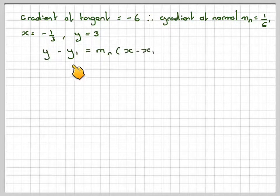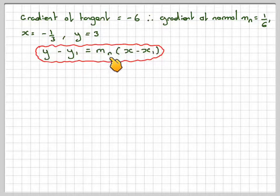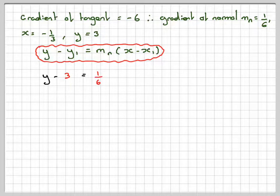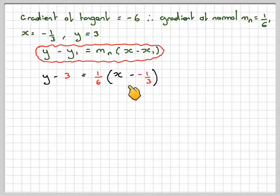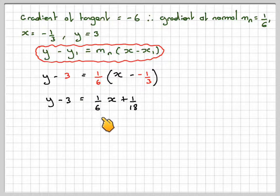So using y minus y1 equals m times x minus x1, and m we're going to call the gradient of the normal. We get y minus 3 equals 1 sixth of x minus minus 1 third. So it gives me y minus 3 is 1 sixth of x, and then that's plus, and then 1 sixth times 1 third is 1 over 18.